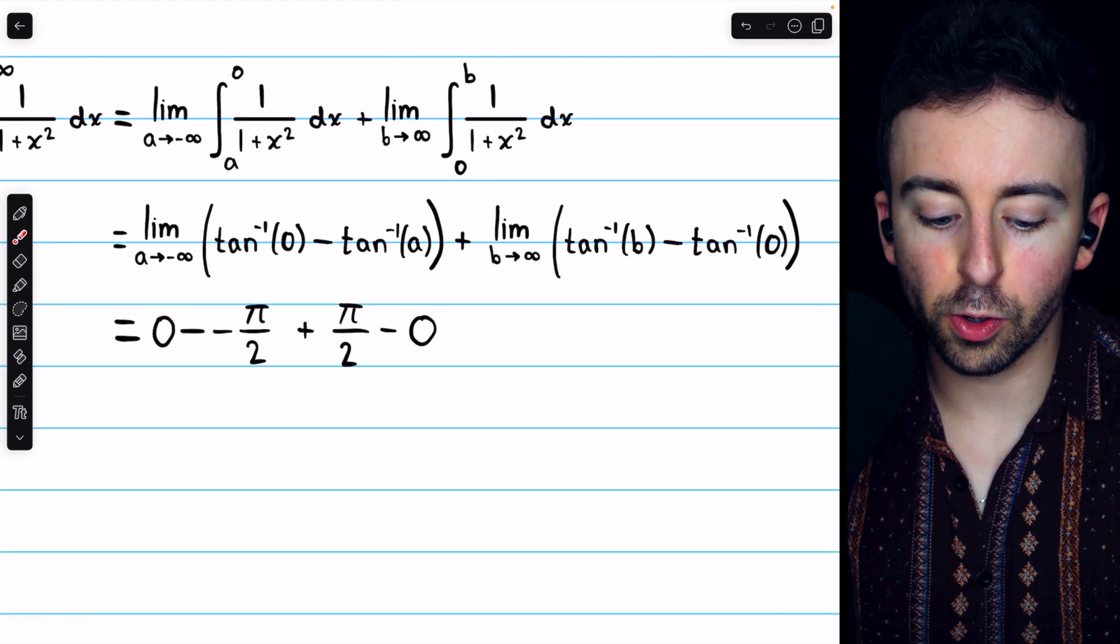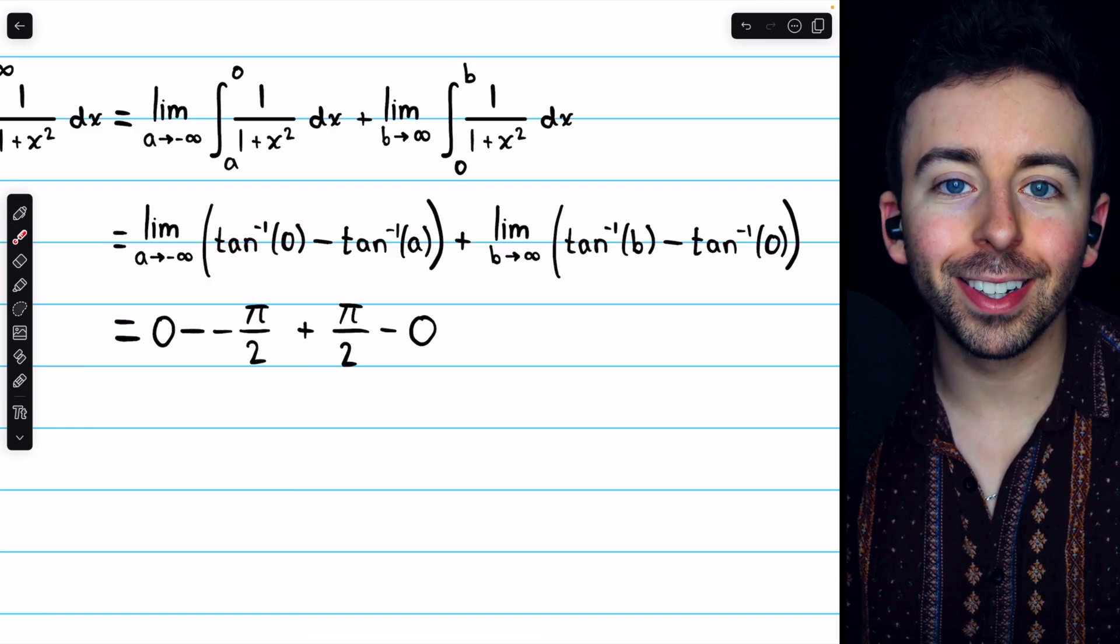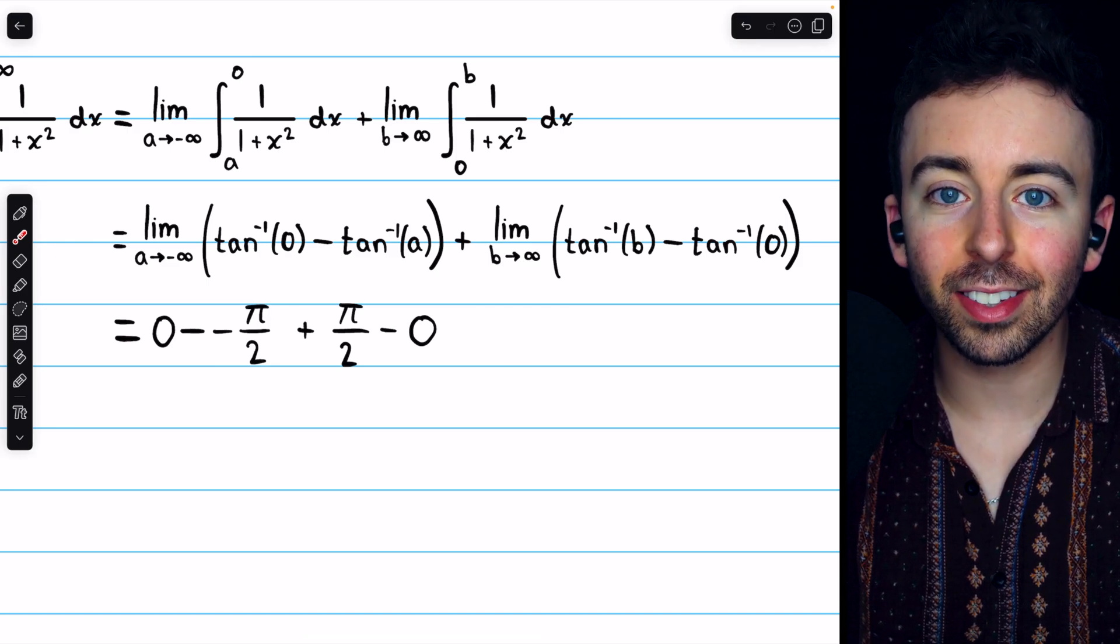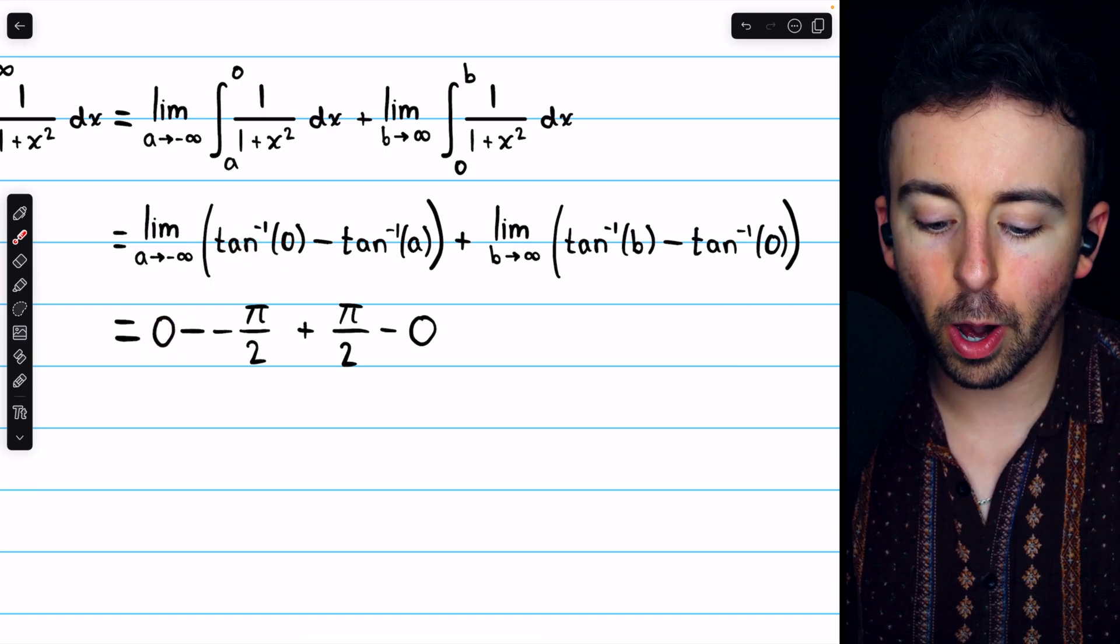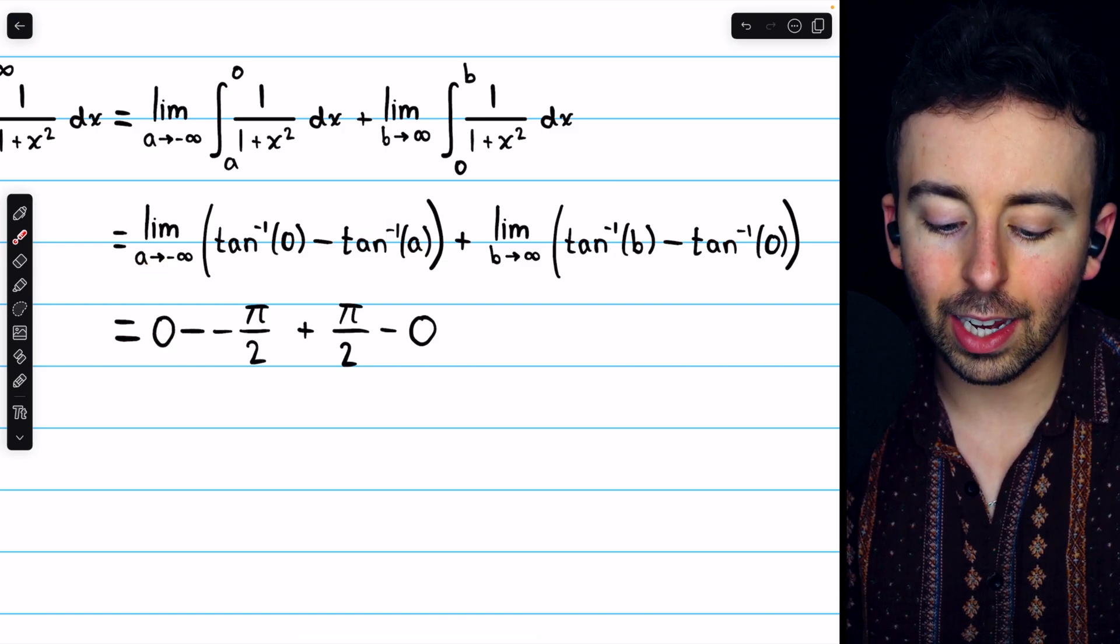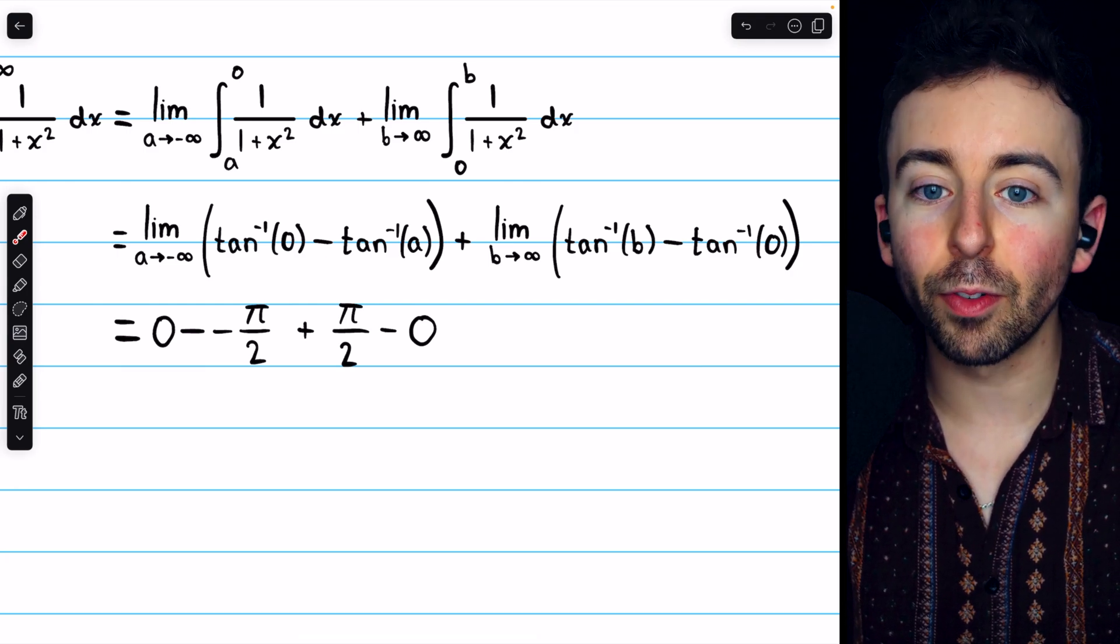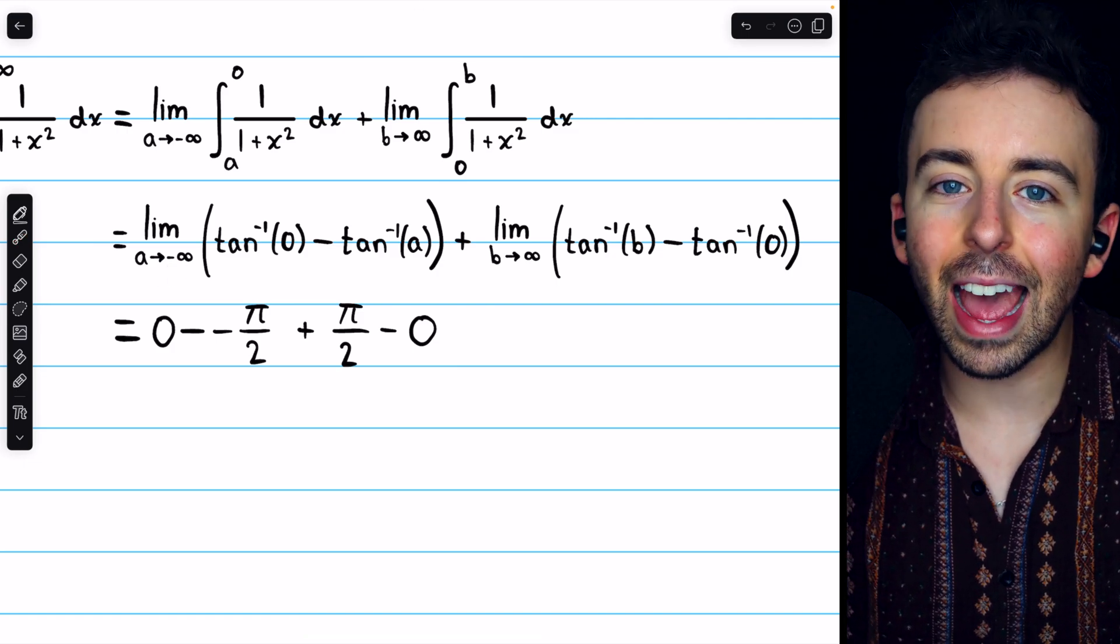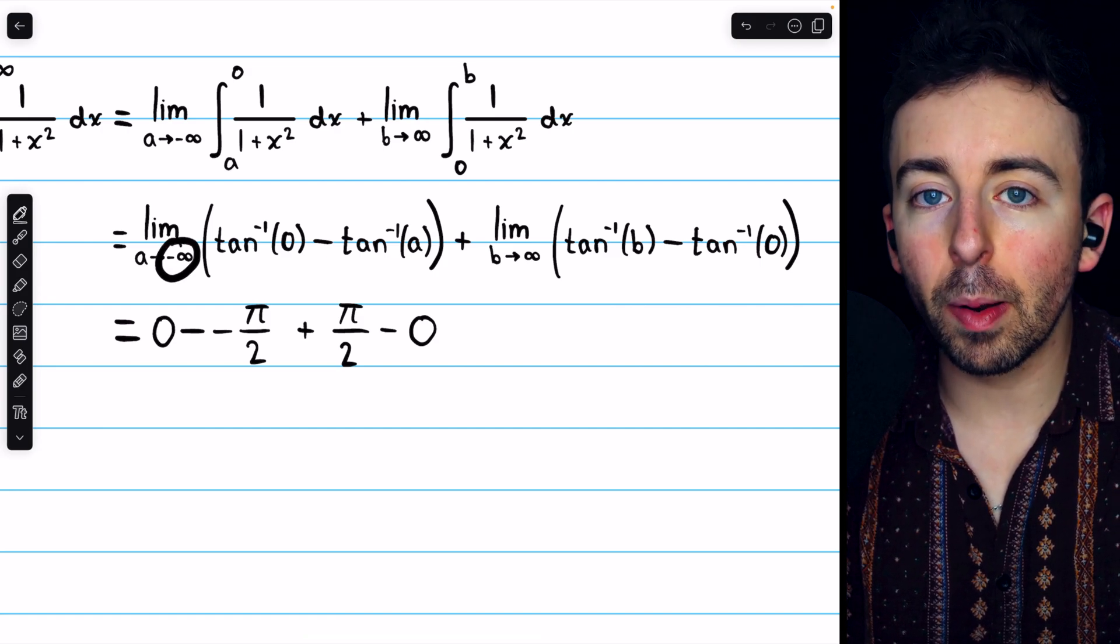Then, this just comes down to your trig knowledge. Arc tan of 0, that's going to be whatever input tangent needs to output 0. Tangent outputs 0 when sine is 0, and sine is 0 at 0. So, arc tan of 0 is 0. And then, arc tan of a, as a goes to negative infinity, that's going to be whatever the input of tangent needs to be to diverge to negative infinity. Really, we're talking about limits here. What does x need to approach for tangent x to approach negative infinity?